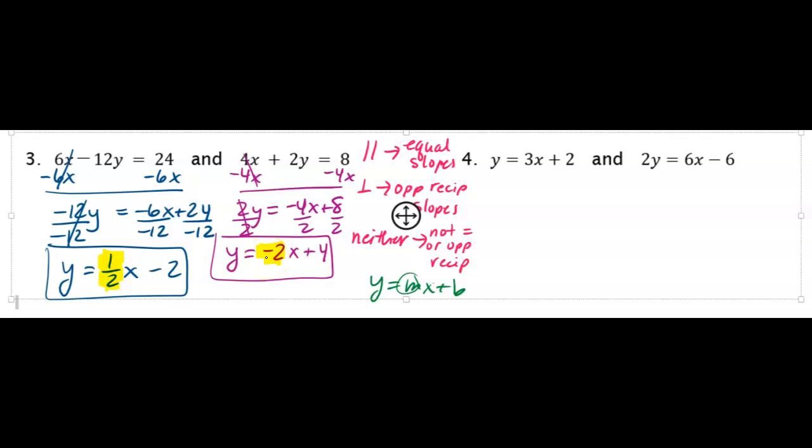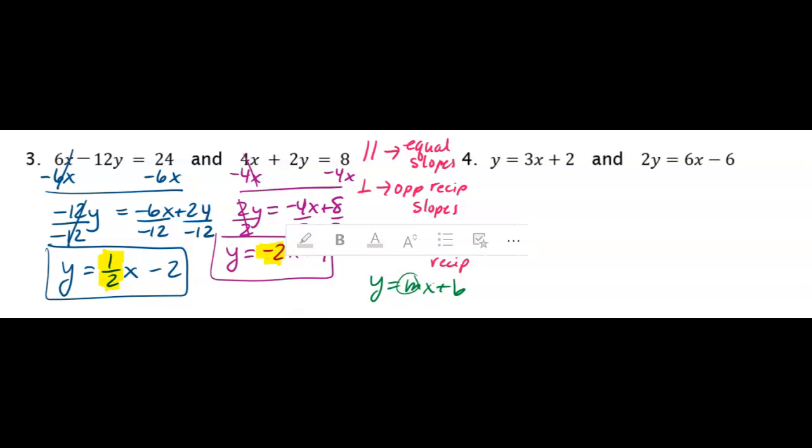So I have three choices here. They are not equal. One half is not equal to negative 2. So parallel is out. It could be opposite reciprocals. They are opposite signs. And even though it doesn't look like it, one half and 2 are actually reciprocals because if I take negative 2 and put it over 1 and I flip it, that does become one half. And then with my opposite sign, that means they're opposite reciprocals. So the answer for my first question here, number 3, is that these two lines are perpendicular because their slopes are opposite reciprocals.